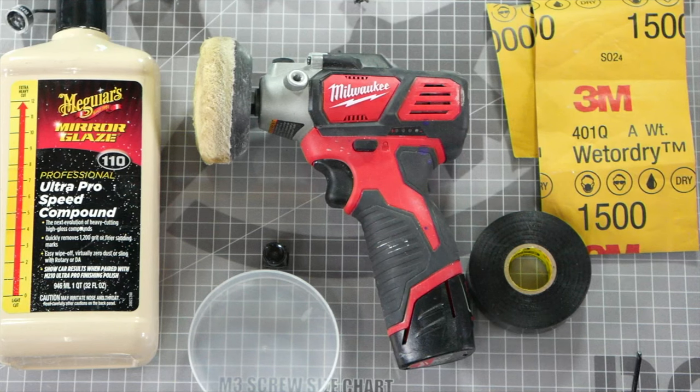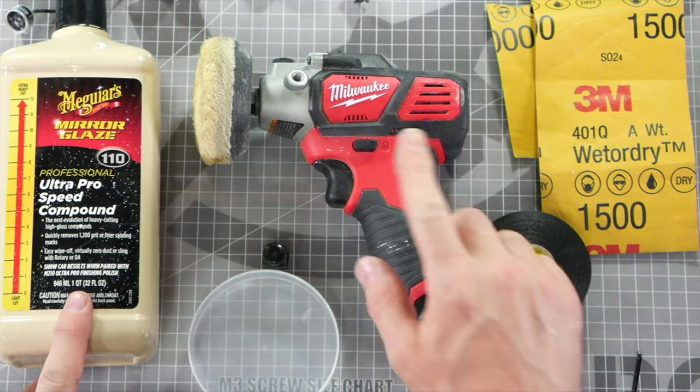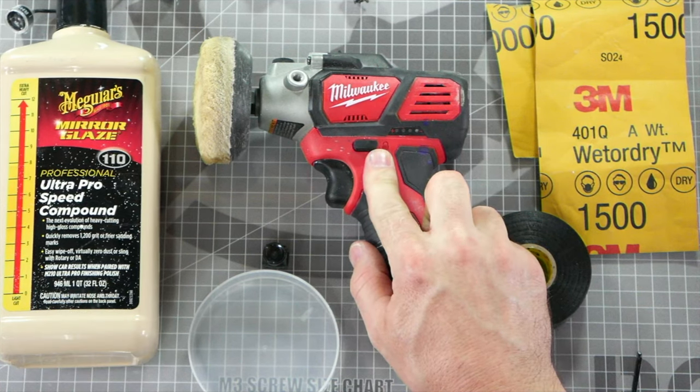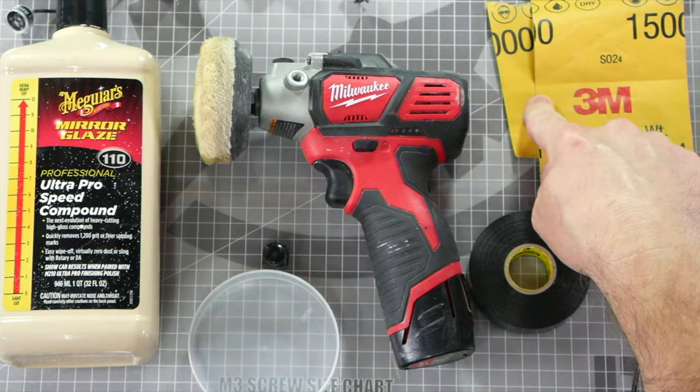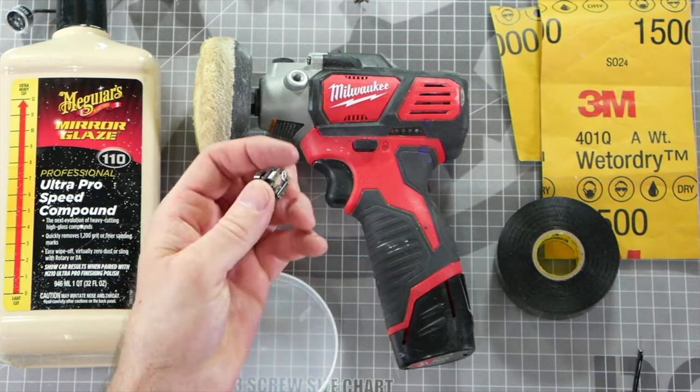This next step is a little bit more advanced. We're going to use some buffing compound, a buffer on the end of a drill, some 1500 and 1000 grit wet sandpaper, and some electrical tape, and of course the camera.